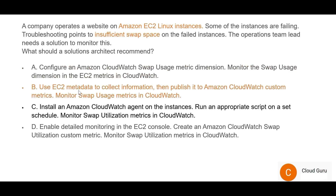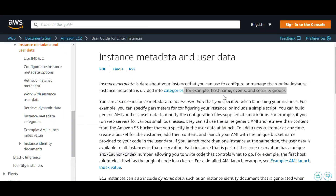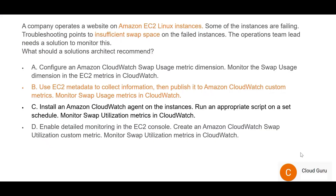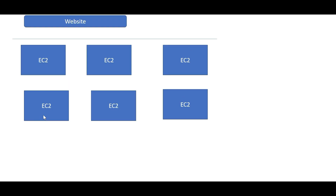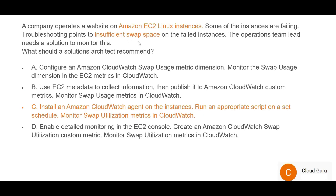Option B talks about using EC2 instance metadata to collect information such as hostnames, events, and security data. This will not help you monitor swap space metrics, so B is wrong. Option C looks correct — swap space is a metric that needs to be monitored, and whenever you want to monitor a metric that is not a standard CloudWatch metric, you need to install a CloudWatch agent on each instance to collect and publish that metric.